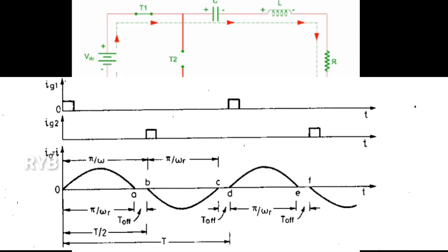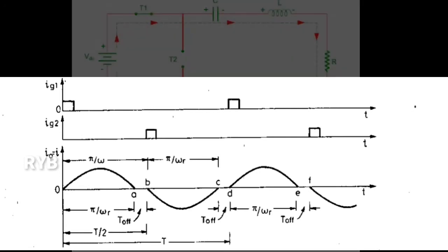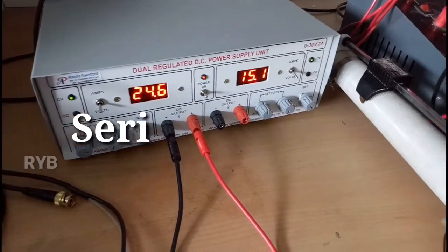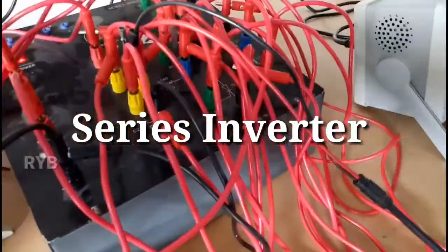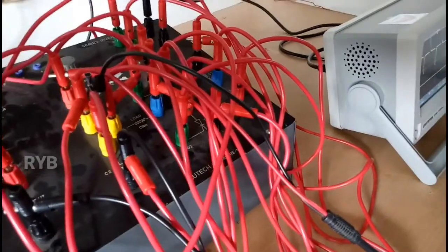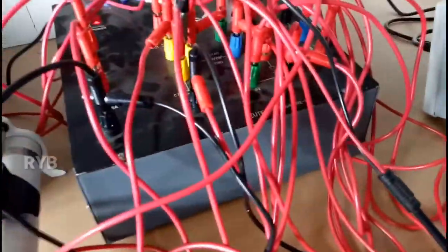These are the load current waveforms for the basic series inverter. The gate pulses IG1 and IG2 are as shown in the figure. The output waveform or load current will be AC voltage as shown in the figure. A freewheeling diode is connected across the load and a CRO is connected across the load to observe the output.